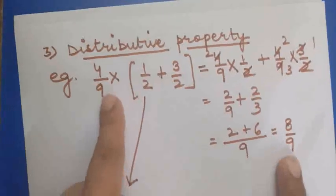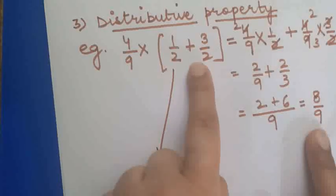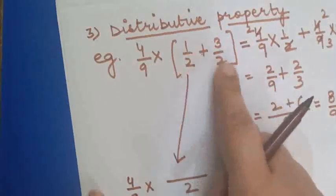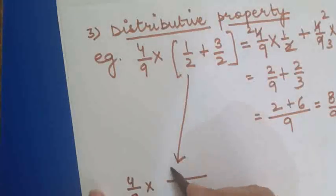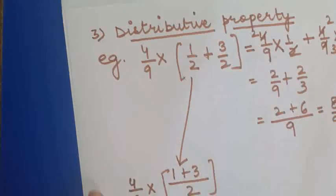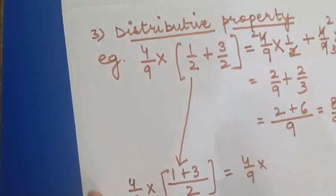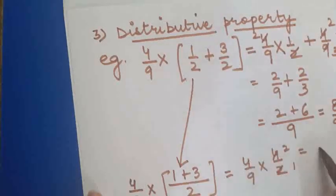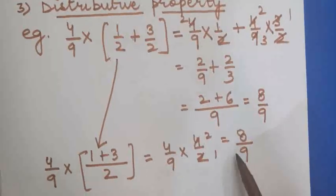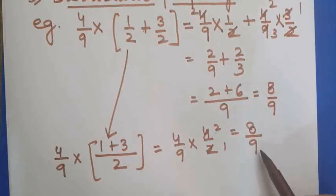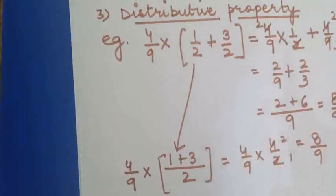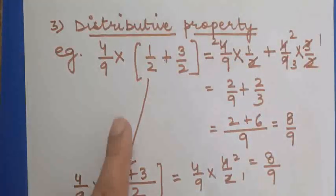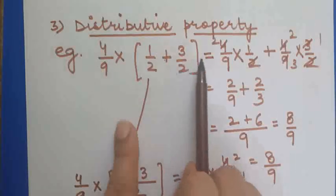We can also solve by opening the bracket first: 4 upon 9 multiplied by the LCM of 1 upon 2 plus 3 upon 2. The LCM is 2, giving 1 plus 3 which is 4 upon 2. So it is 4 upon 9 into 4 upon 2, which again gives 8 upon 9. In both cases the result is the same. But if the question says to apply the distributive property, you must apply that method.